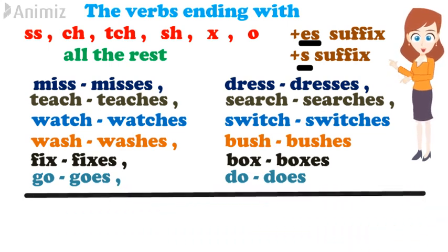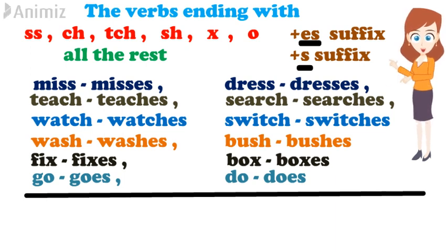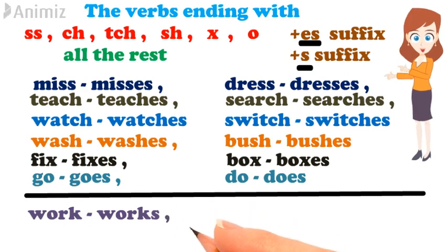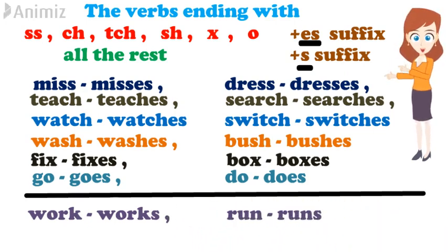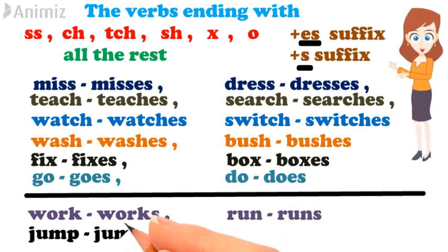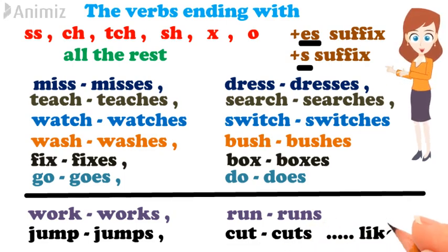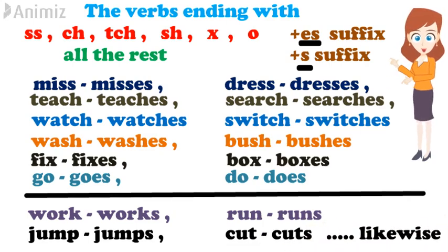Now, the verbs ending with letters other than these need only S. For example: work — works, run — runs, jump — jumps, cut — cuts. And likewise.